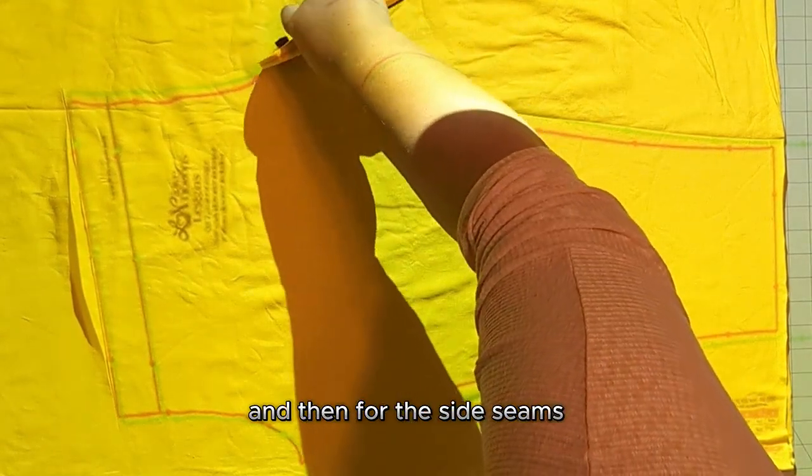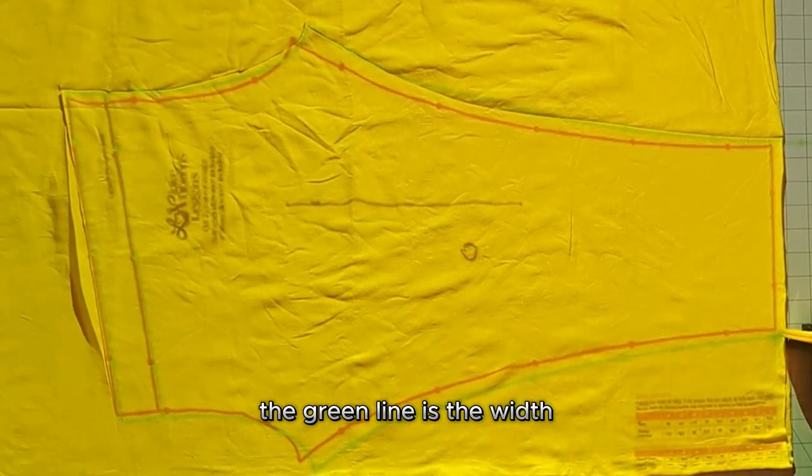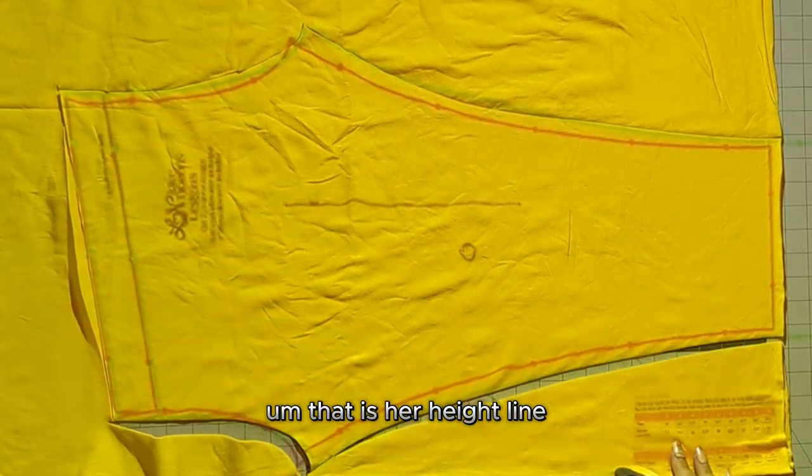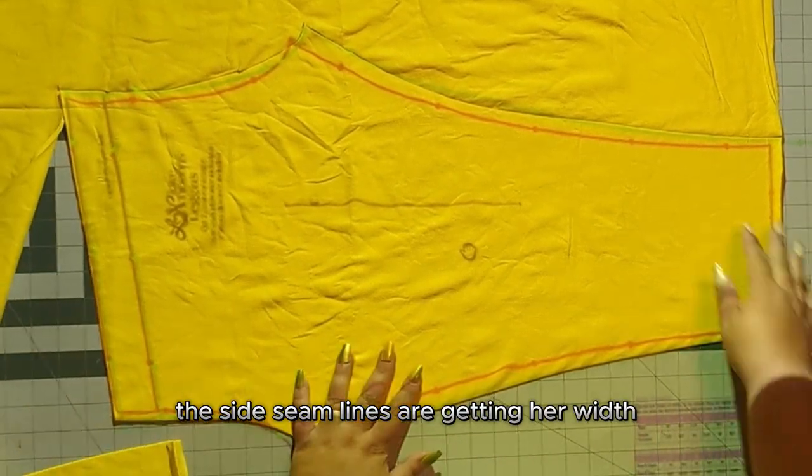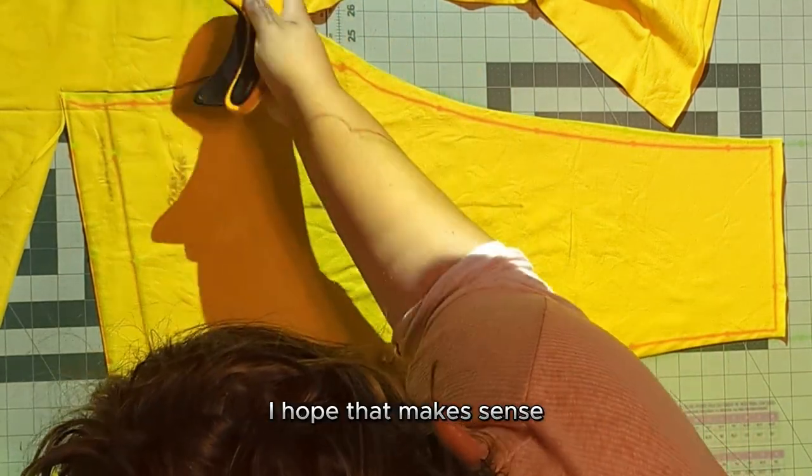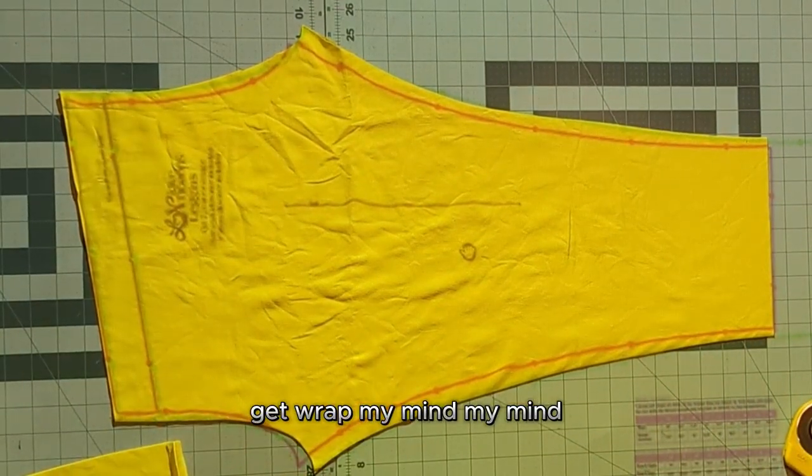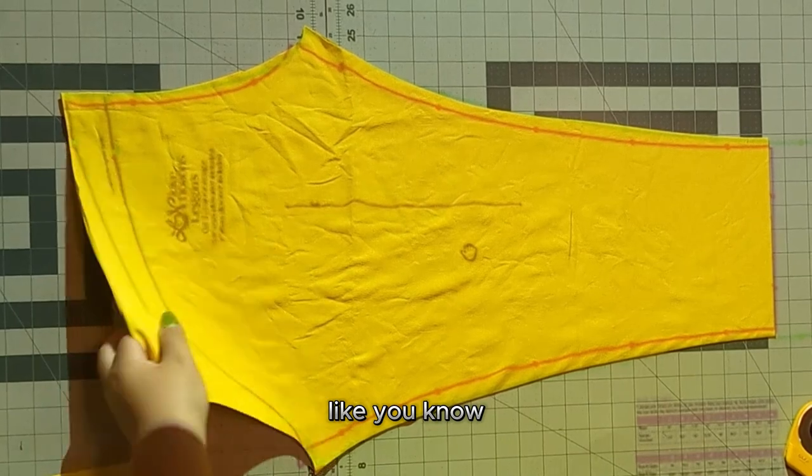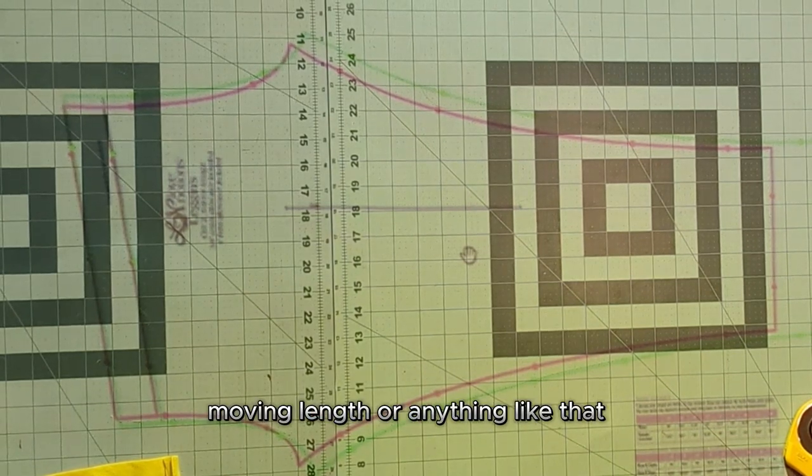So all I'm doing is on the top and bottom of the pattern. So at the waist and at the hem, I am cutting her length. And then for the side seams, I'm cutting her width size. So the green line is the width. I believe that's the size 10. And then the red line, actually it's pink, but it looks red here or orange. That is her height line. So I'm just following the side seam lines are getting her width and the top and bottom is getting her height. I hope that makes sense. I know it's kind of confusing to explain. It takes me a minute to wrap my mind around it, but it works. And you'll see her pictures like, you know, there we go. We've got the proper width and the proper length. And I didn't have to math any, like adding like a moving length or anything like that.